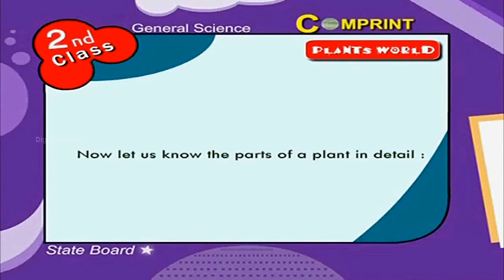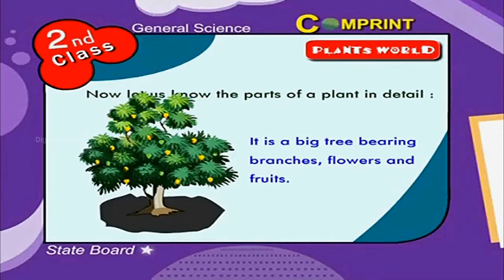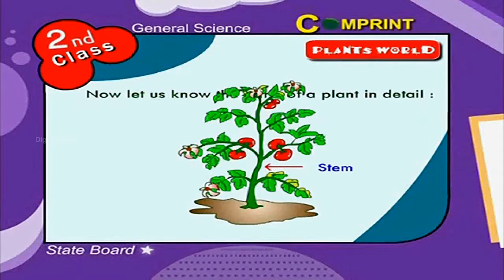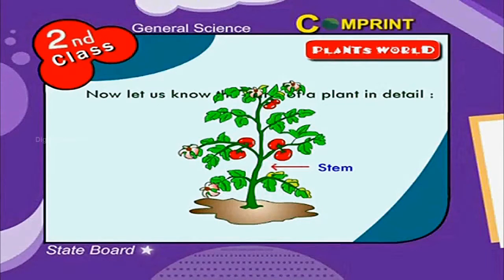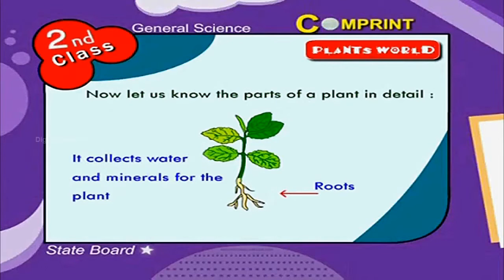Children, now let us know the parts of a plant in detail. Look at the picture. It's a big tree bearing branches, flowers and fruits. This is the stem or trunk of the tree — it is the main body of a plant that carries food and water to all parts of the plant. These are roots. Roots give support to the tree, grow under the ground, and collect water and minerals for the plant.